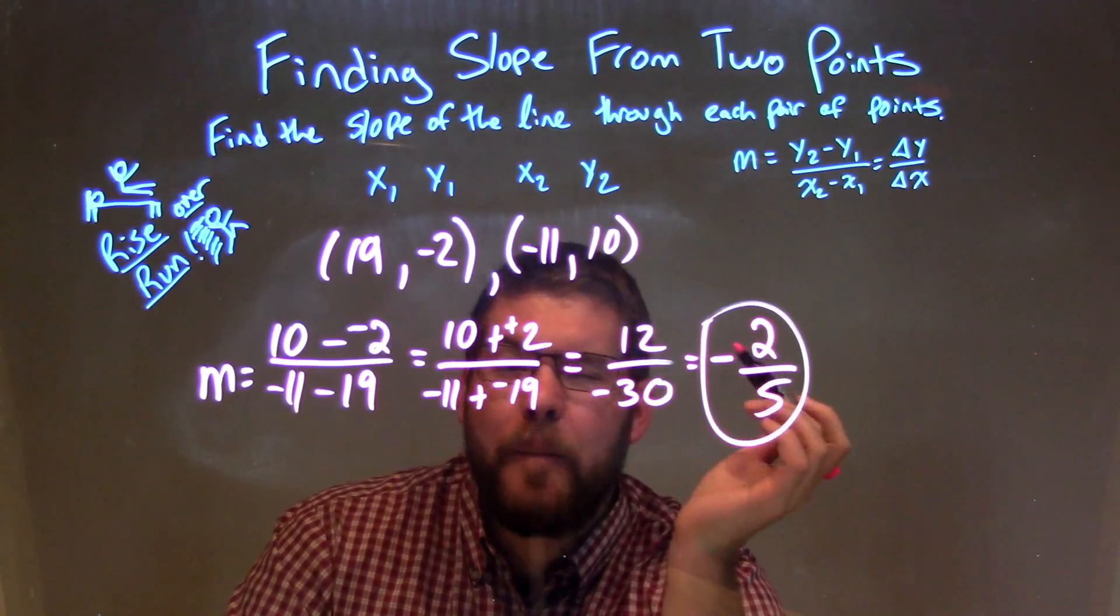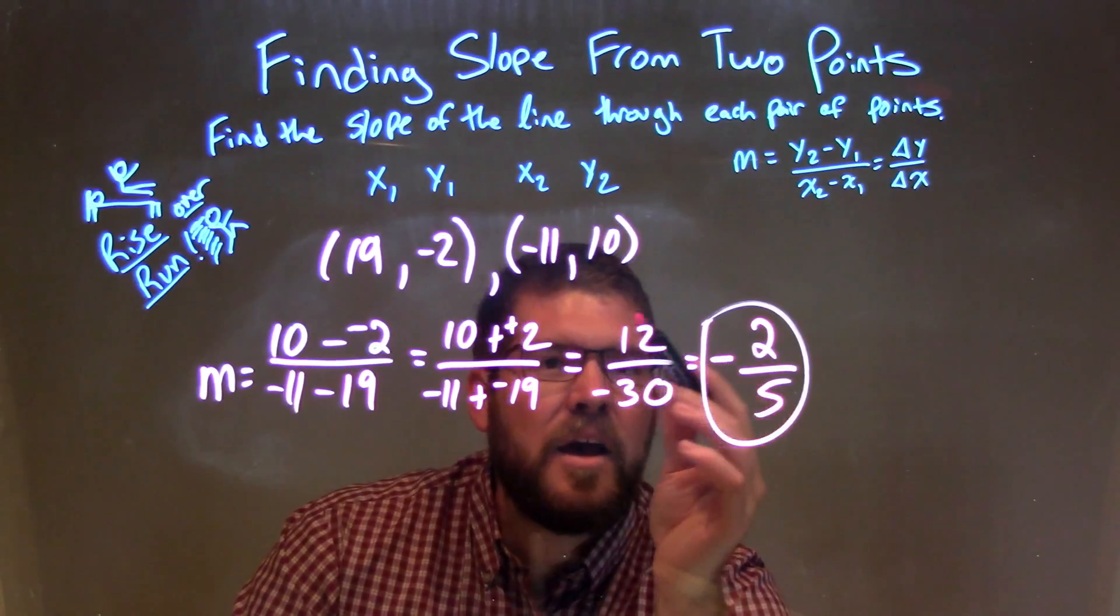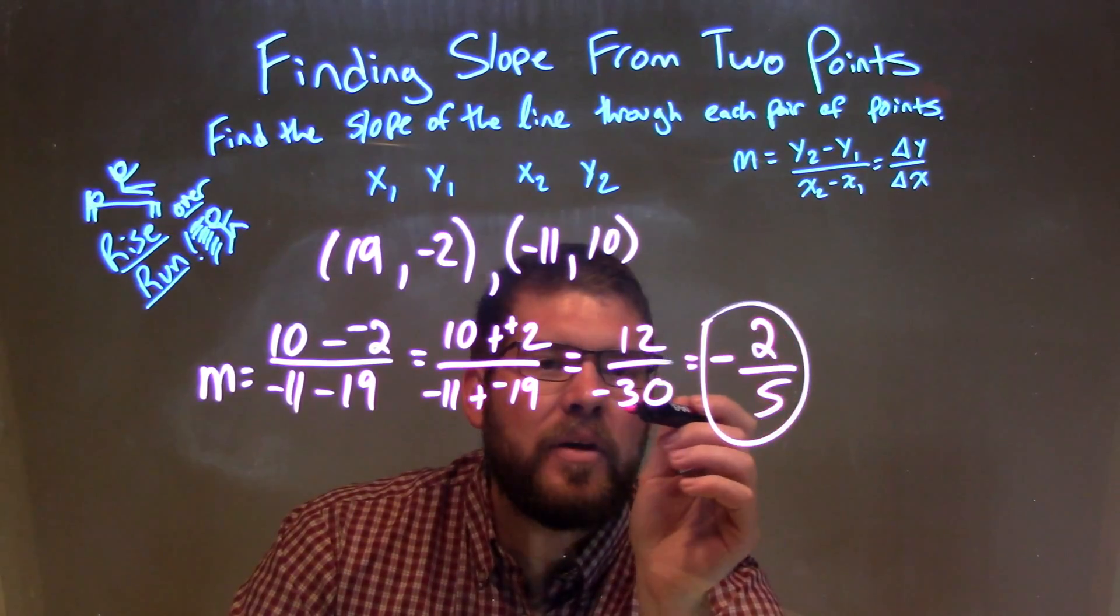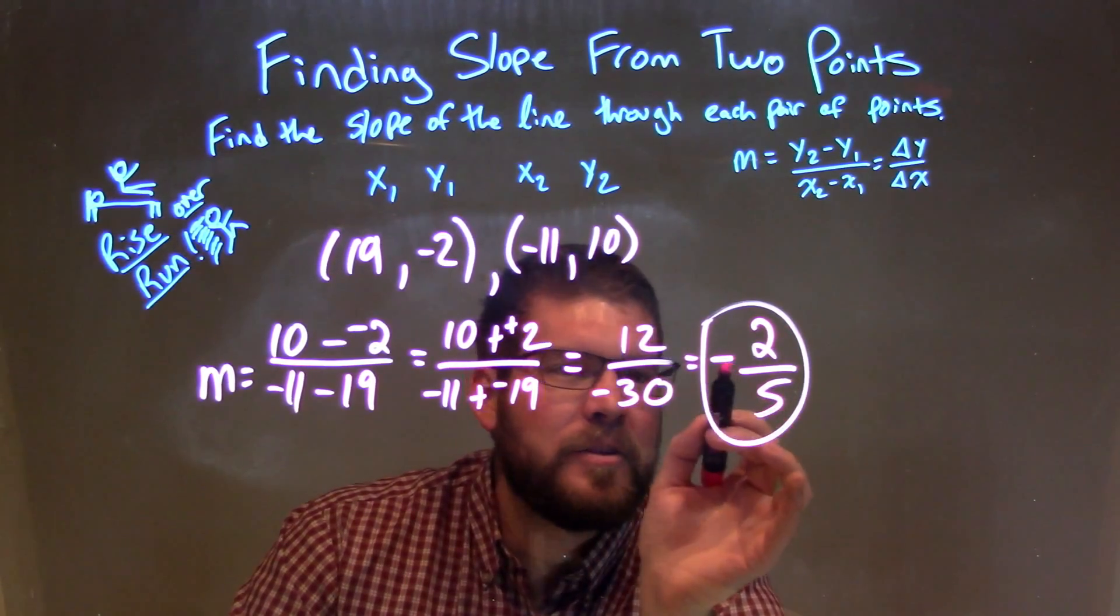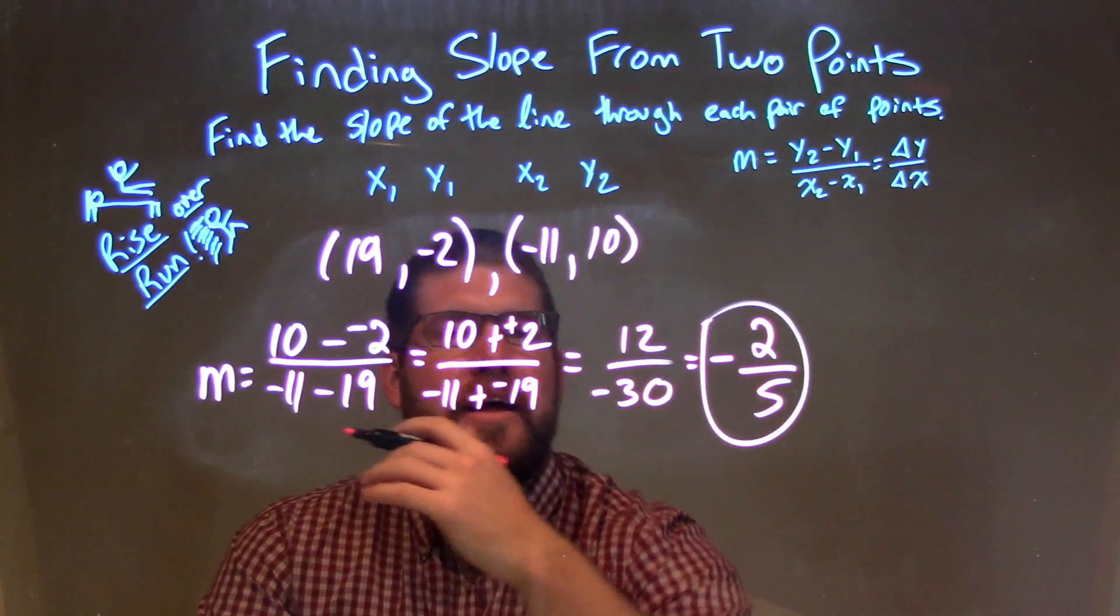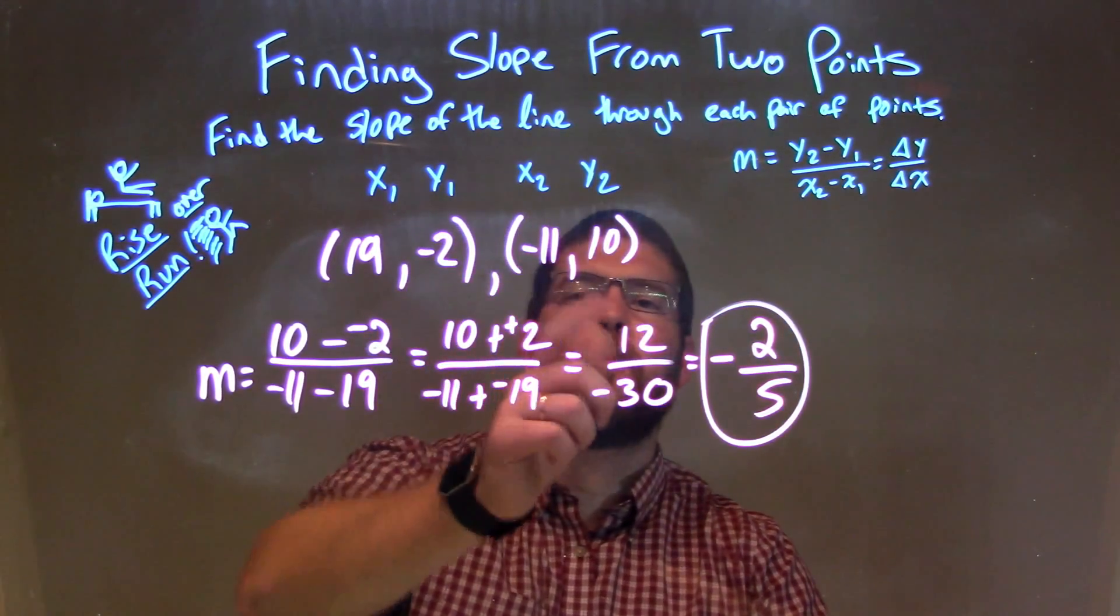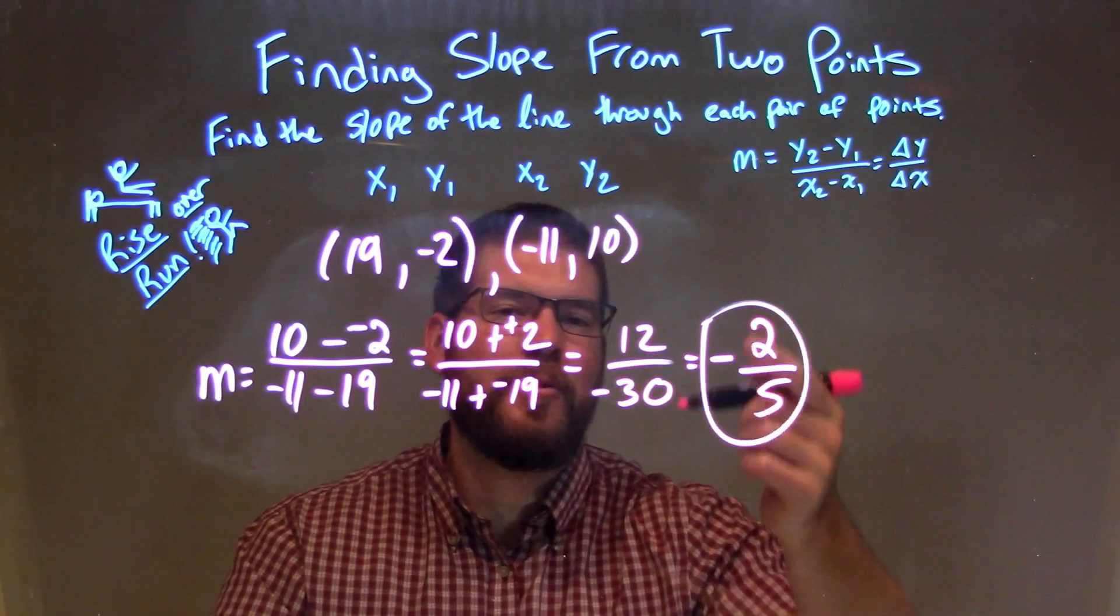Well, 12 over 30, both were divisible by 6. 12 divided by 6 is 2, and 30 divided by 6 is 5, and the negative we just put it out front there. Our final answer, our slope here between these two points, is negative 2 fifths.